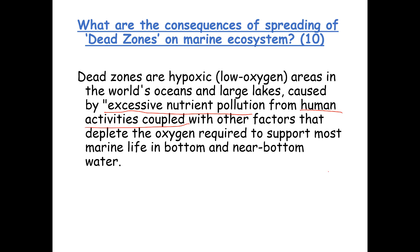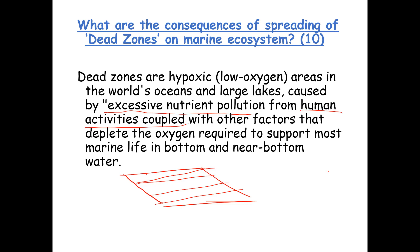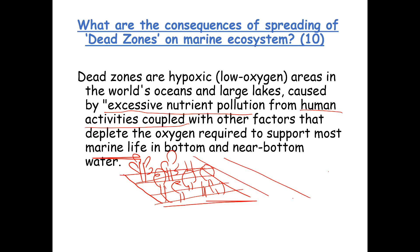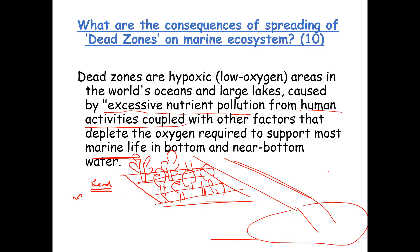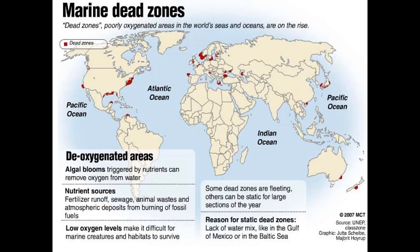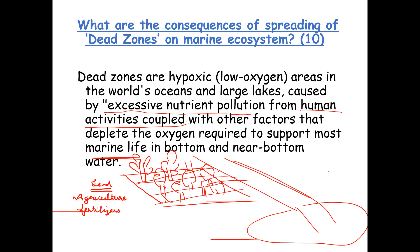Let me explain how dead zones occur. Assume this is a piece of land with crops and trees, a river passing through, and a lake or ocean nearby. When you do agriculture, you use fertilizers — specifically phosphates — and over time these phosphates go into the river, making it NPK-rich, which then flows into the ocean.